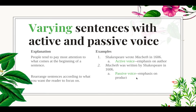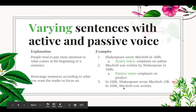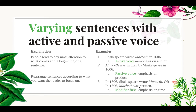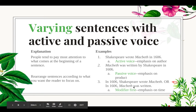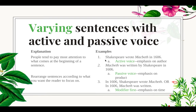If we switch it around, 'Macbeth was written by Shakespeare in 1606' is passive voice — we can recognize this from the word 'was' added to the main verb. Here the emphasis is on the product, Macbeth. If the most important part of your sentence is Macbeth rather than Shakespeare, this is an acceptable way to switch it up.